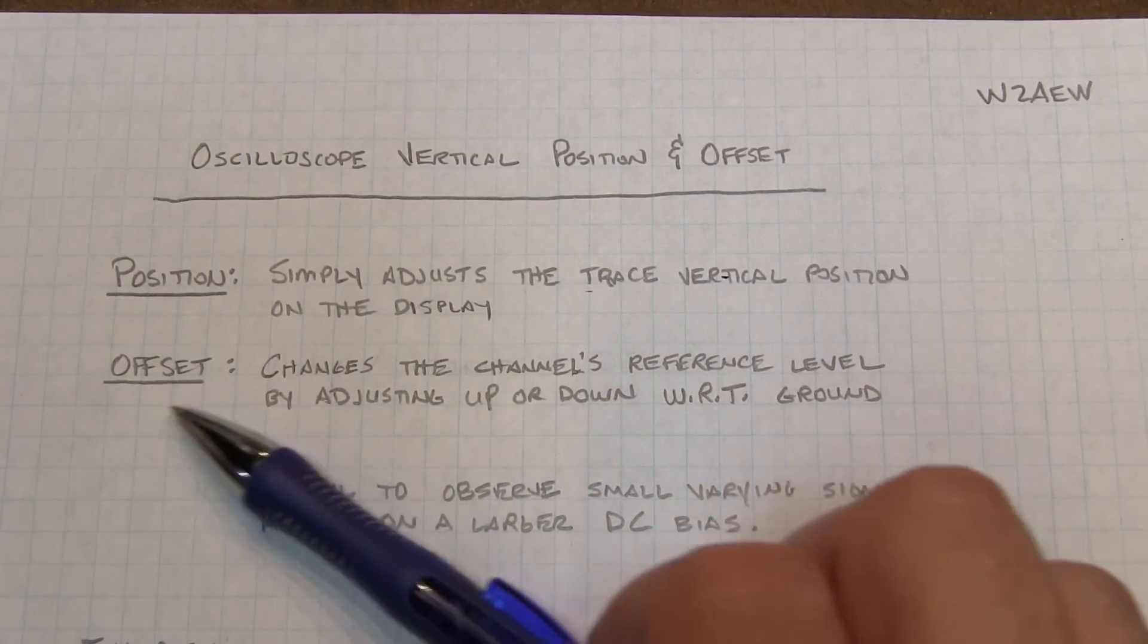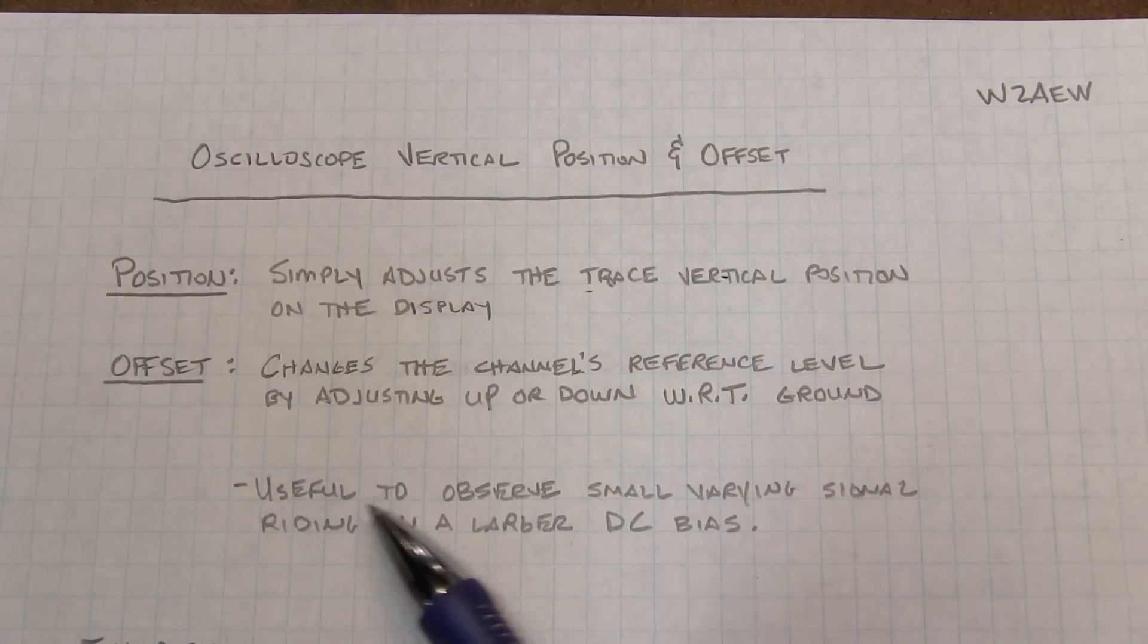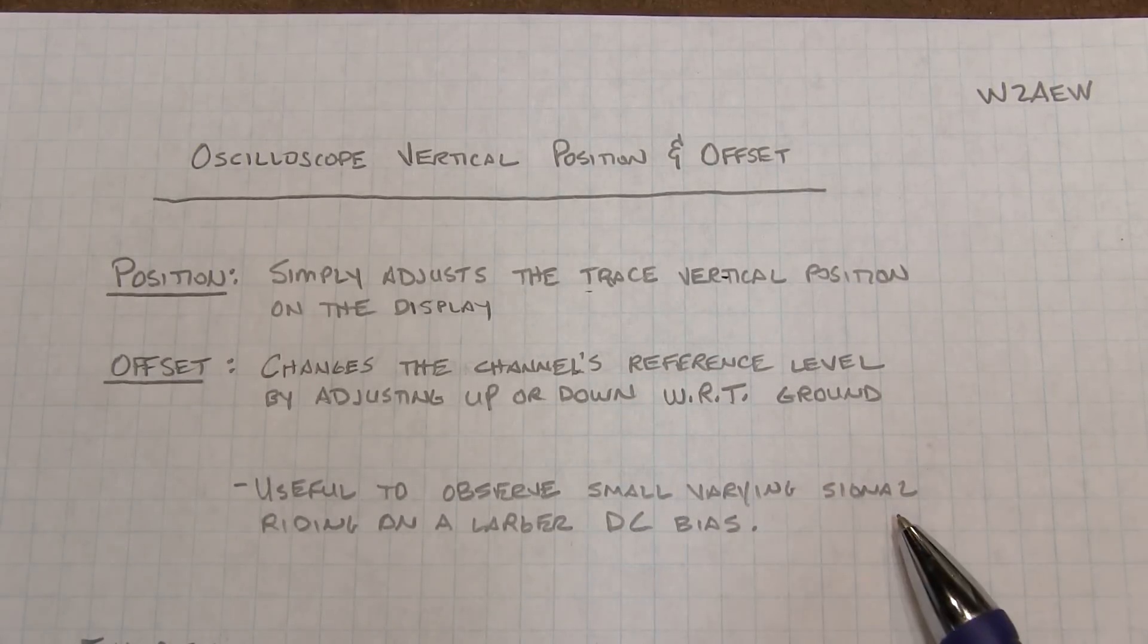Now where is this useful? It can be really useful to help you observe small varying signals that are riding on top of a larger DC bias. So let's take a look at an example and this should all fall into place for you.